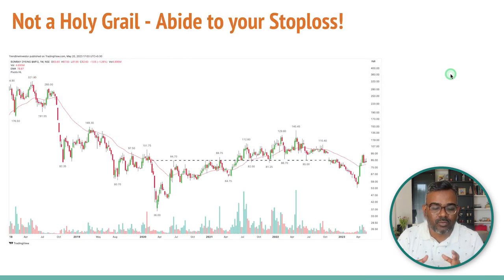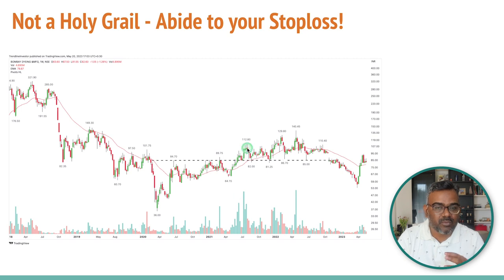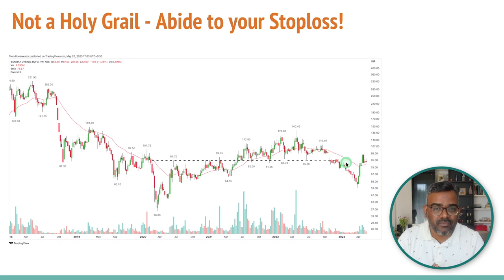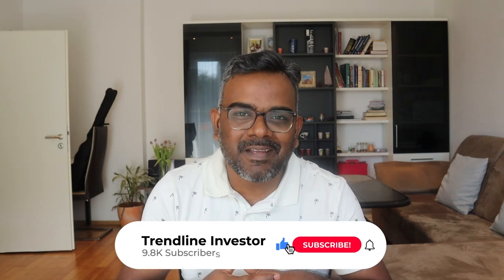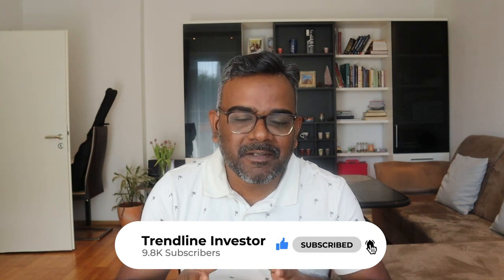The last example is Bombay Dyeing. Remember — this is not a holy grail strategy. Bombay Dyeing is not a fundamentally strong company. There was a breakout with volumes satisfying all criteria, but then a breakdown followed. If you bought thinking it was entering stage two, you should have exited when it failed to respect the stage two guidelines from Stan Weinstein. Always stick to your stop-losses — that's the only thing that can save your money. Like and subscribe if you enjoyed this video. Take care, stay safe, trade safe!